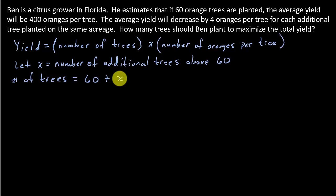And then the number of oranges per tree, when there's 60 trees, there's 400 oranges,